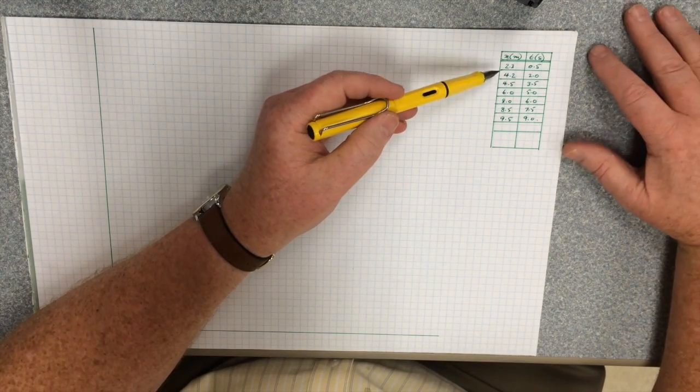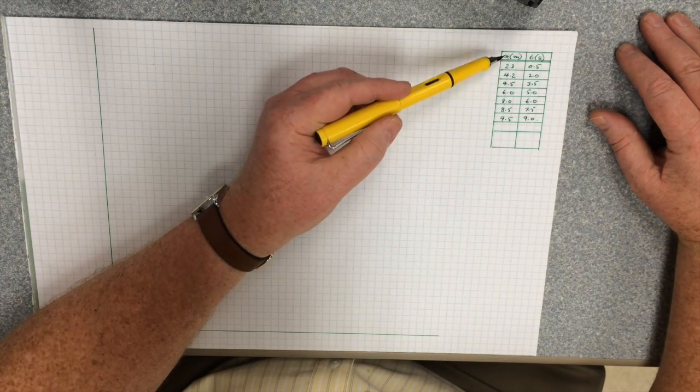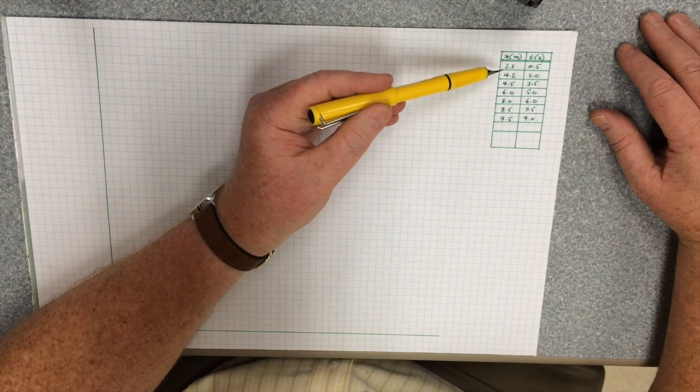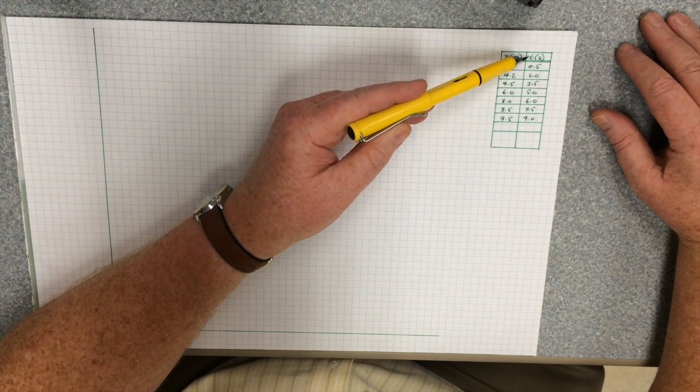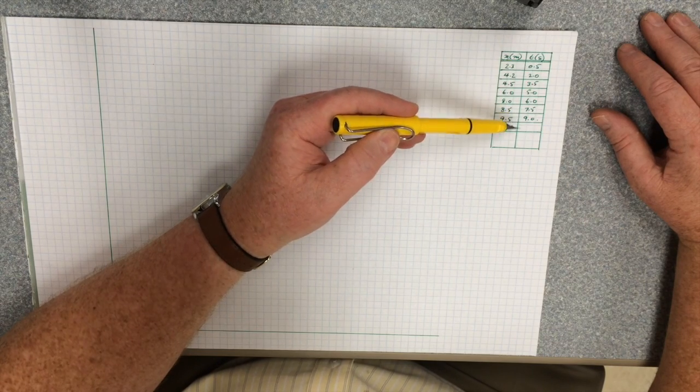If we look over here at this data, we see that we have x and t values between 0 and 9.5, and the time is between 0 and 9.